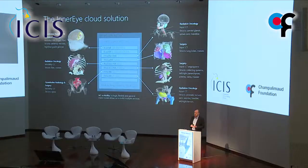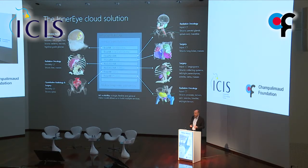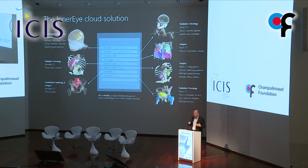We have roughly seven models that can be used in different clinical areas. The prostate model is perhaps the most mature. We are also working within radiation oncology on models for head and neck, and for interventional oncology on models specifically around the liver. We have a public partnership with Intuitive Surgical around partial nephrectomy — whole kidney segmentation, arteries, and so on. We are also working with collaborators around brain tumors more generally.